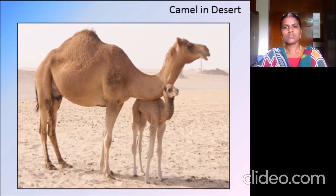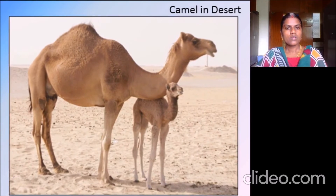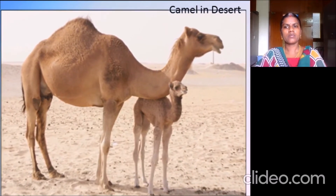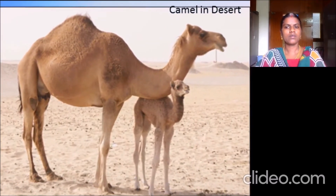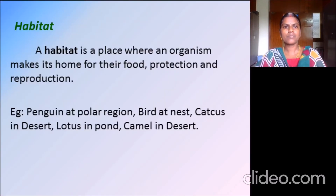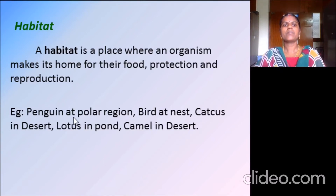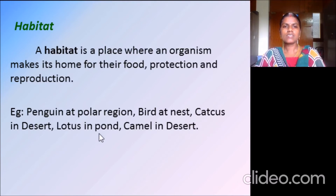So define habitat: a habitat is a place where an organism makes its home for their food, protection, and reproduction. Examples we have seen: penguin at polar region, bird at nest, cactus in desert, lotus in pond, and camel in desert.